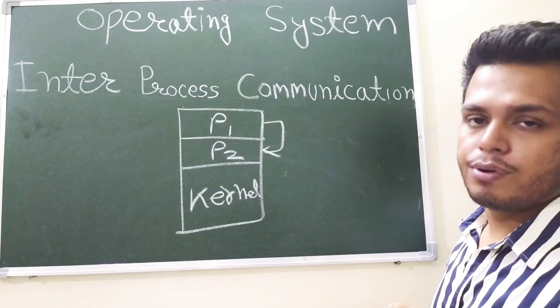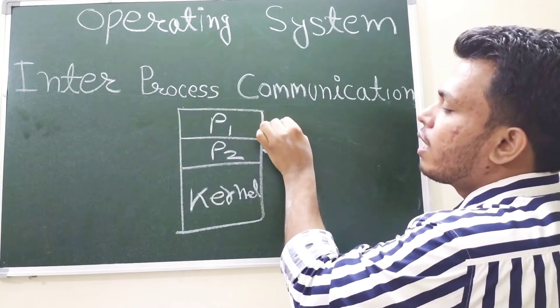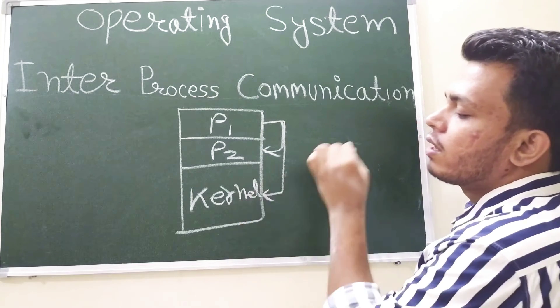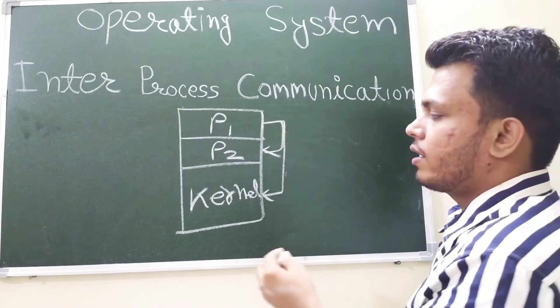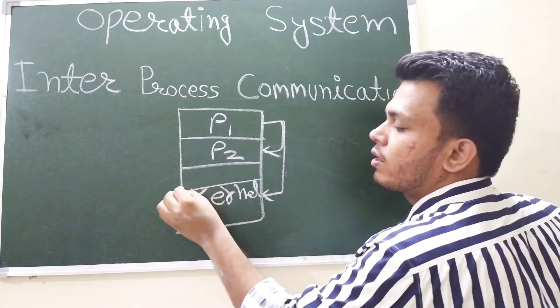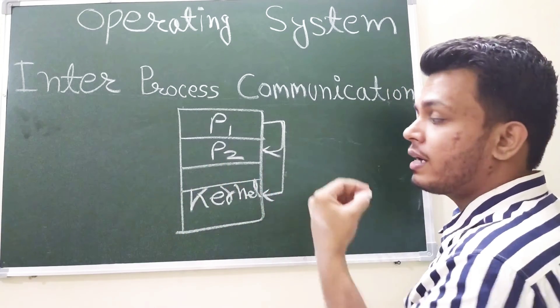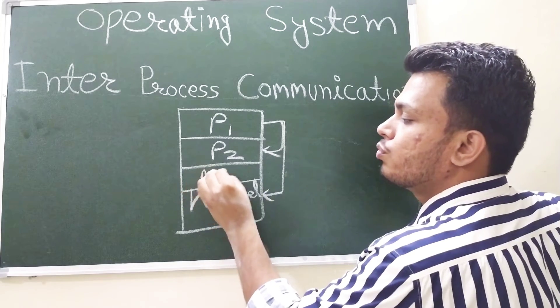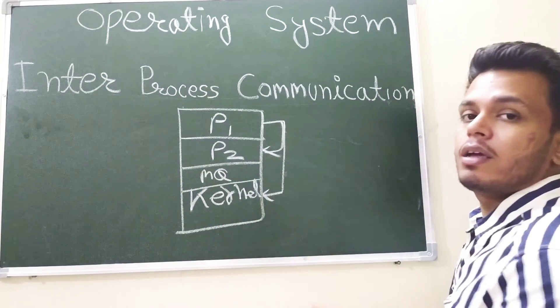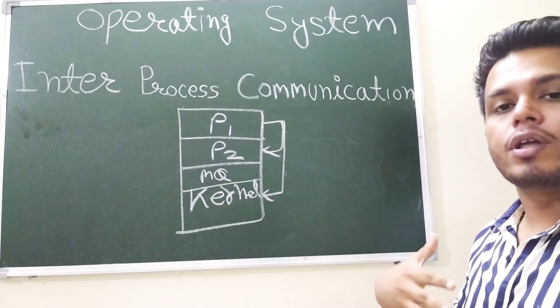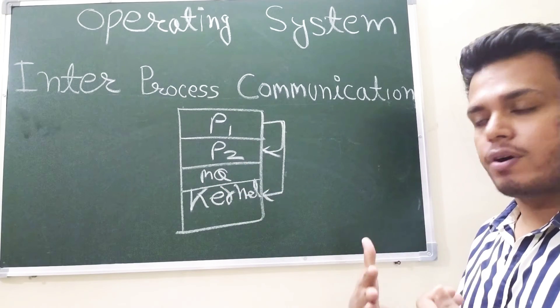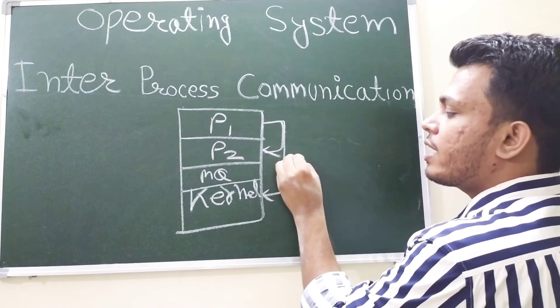Suppose P1 wants to communicate with P2. What does P1 do? P1 simply asks kernel, sends its message to the kernel. And kernel is doing what? Kernel is maintaining a message queue. Kernel is maintaining a message queue in which it is storing the message. It is a kind of buffer and it is sending a message.